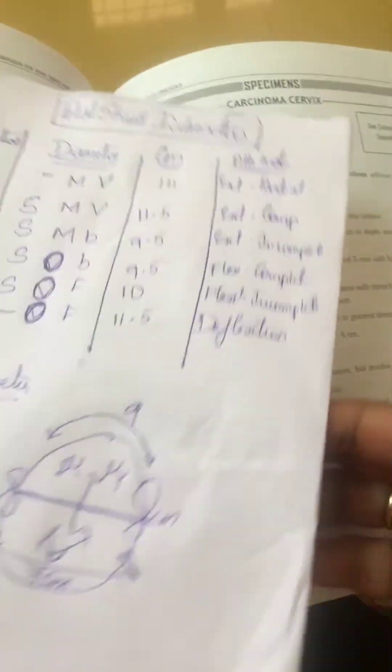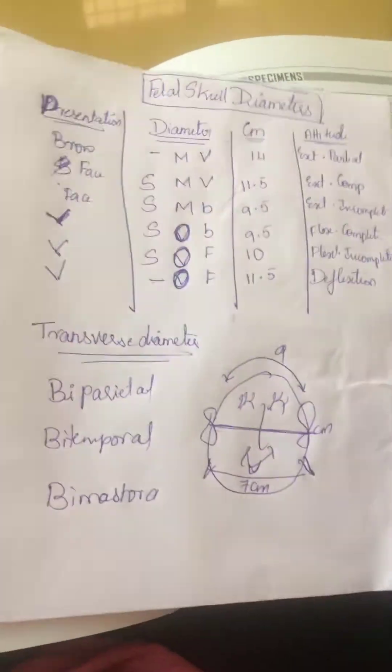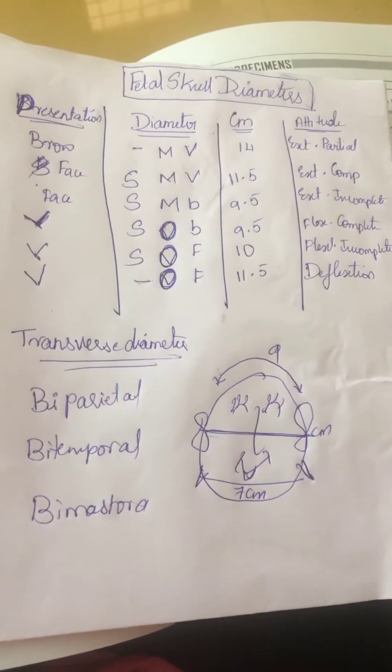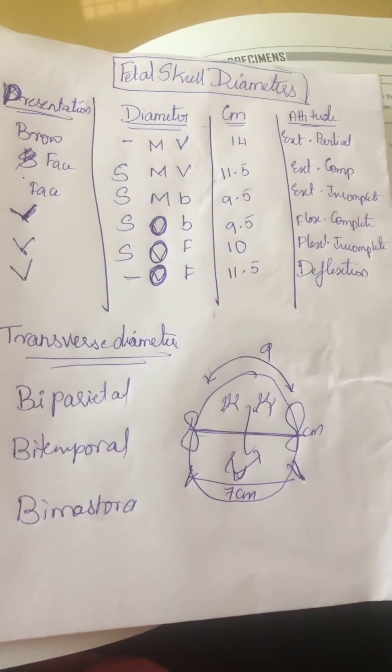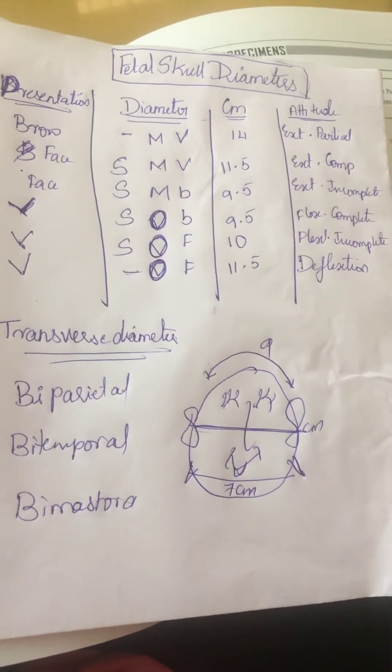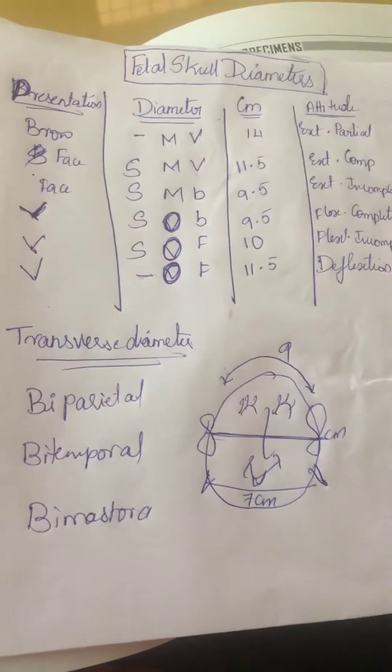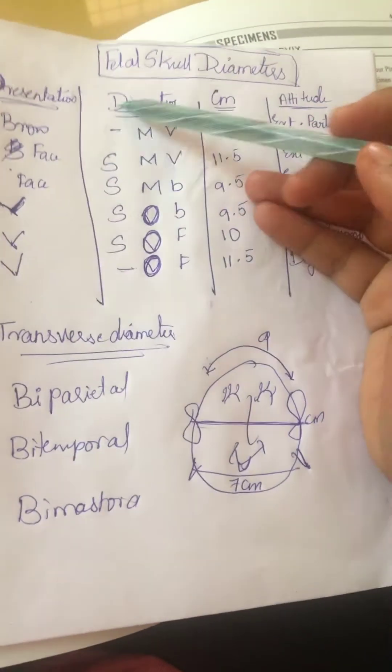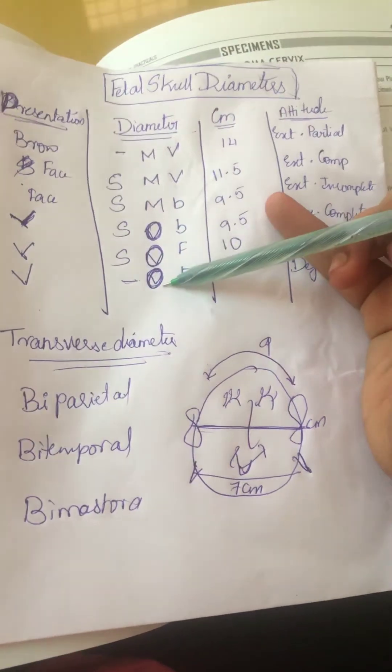Fetal skull diameters. There is an easy way to remember fetal skull diameters. There are total six components.